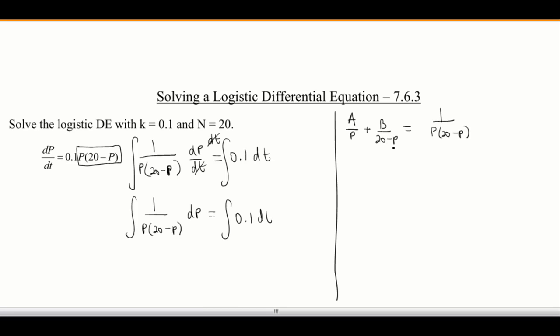Now we've got to find a common denominator. That's going to give us A times 20 minus p plus Bp equals 1. Now if we let p equal, let's see, we'll wipe out the A first. If we let p be 20, this first piece is going to wipe out, so that gives us B times 20 equals 1. So that means B equals 1 over 20.